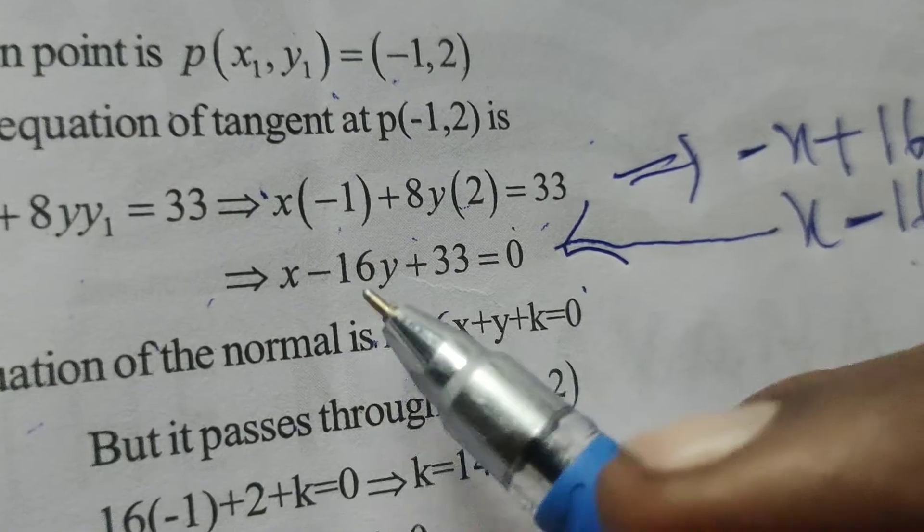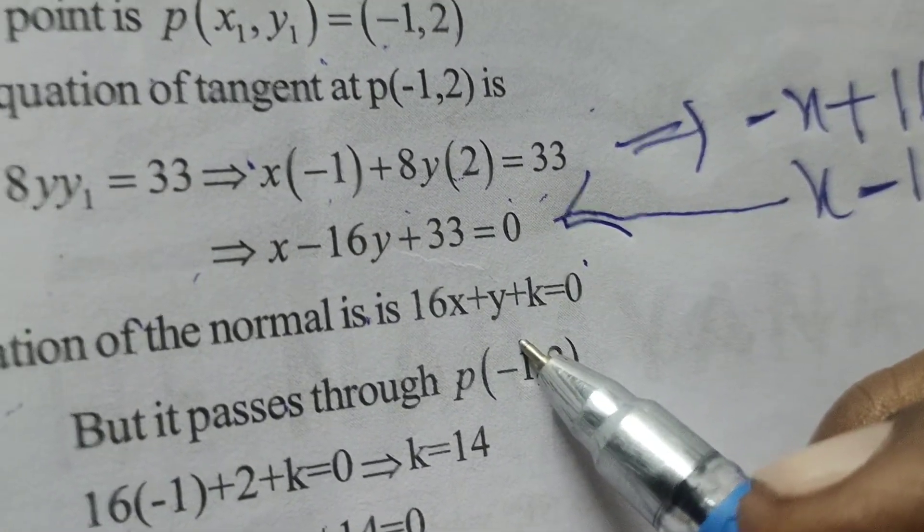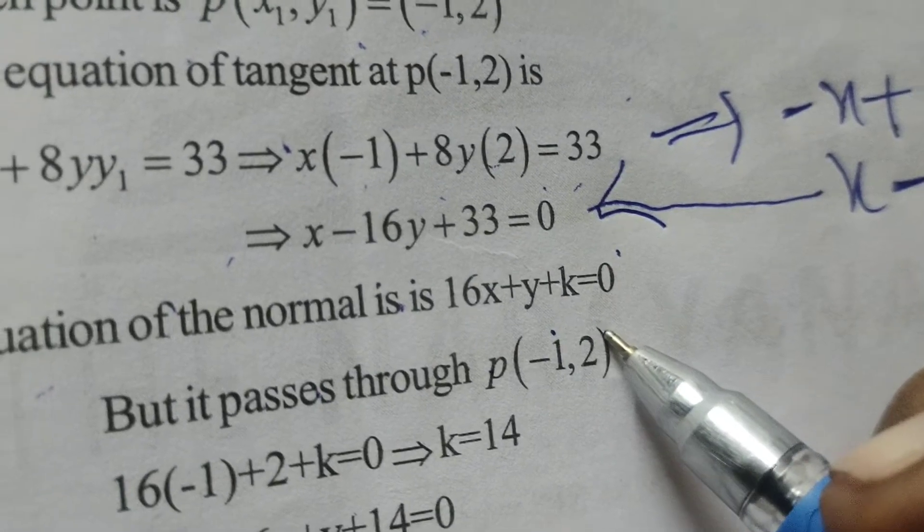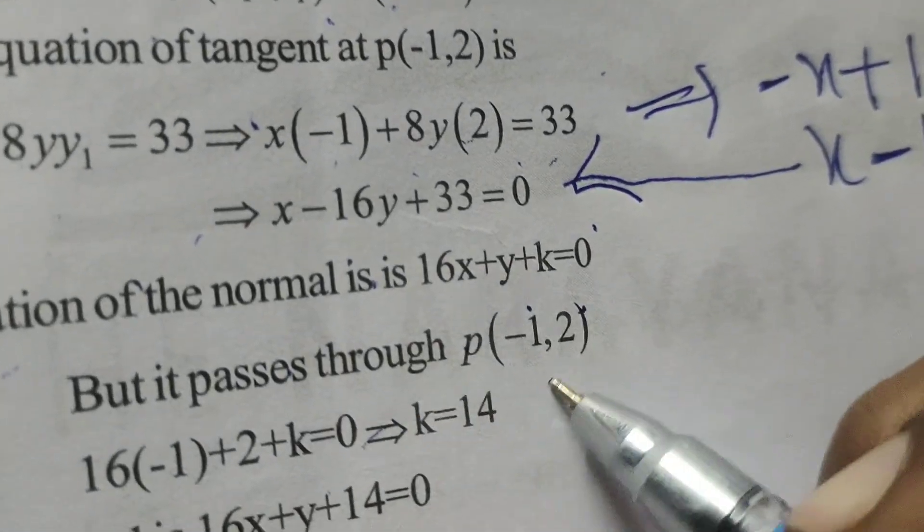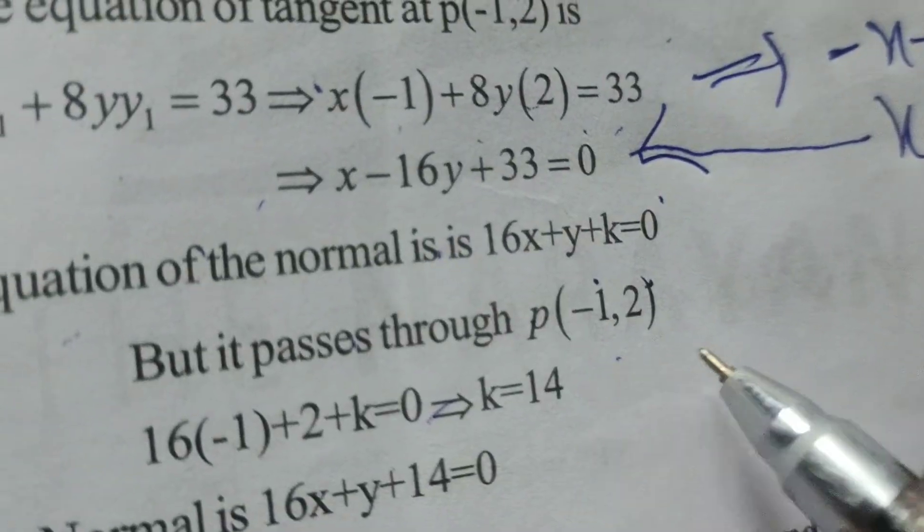is 16x + y + k = 0, but it passes through the point (-1, 2). Now,